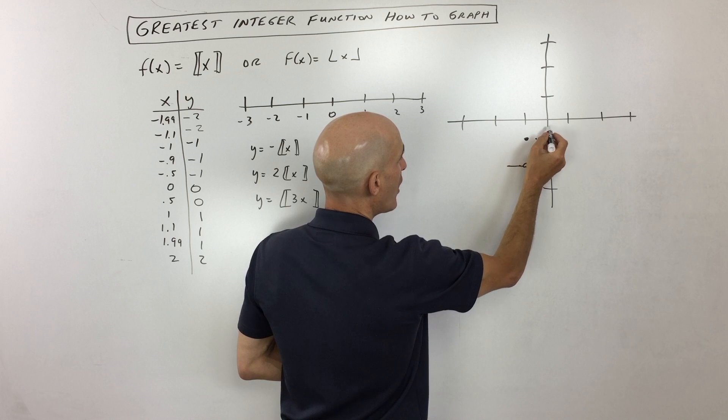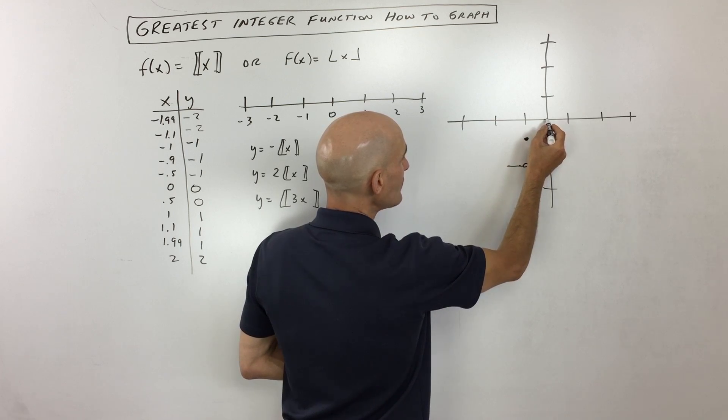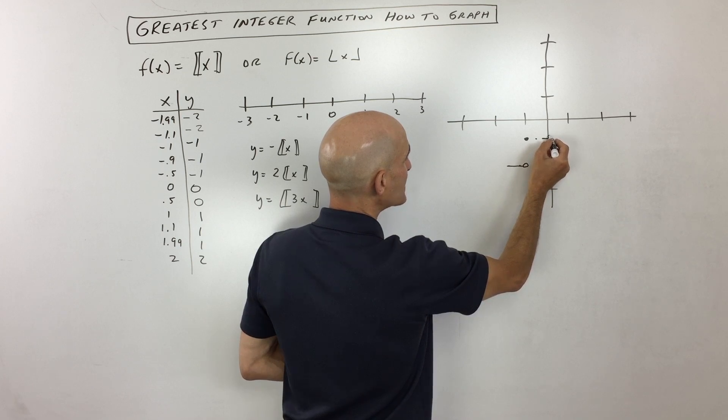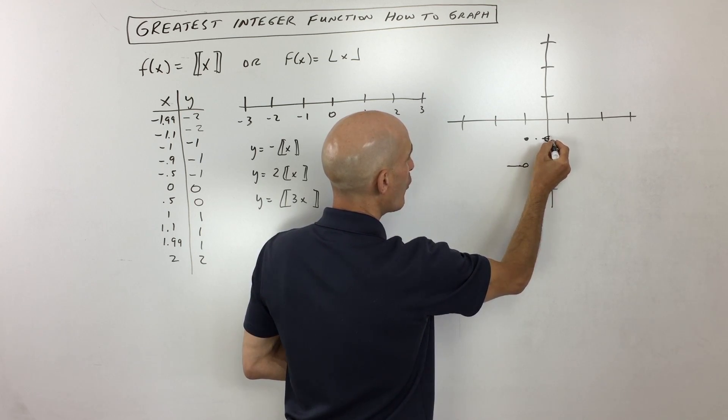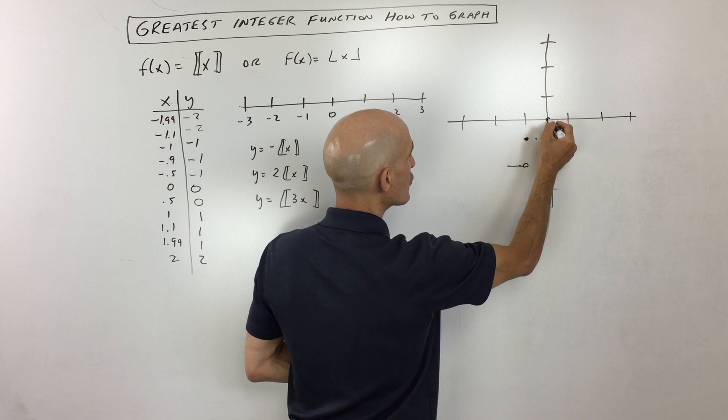At negative 0.5, you're at negative 1. At negative 0.1, you're still at negative 1. But as soon as you get to x equals 0, we're open here. We jump up to 0 here.